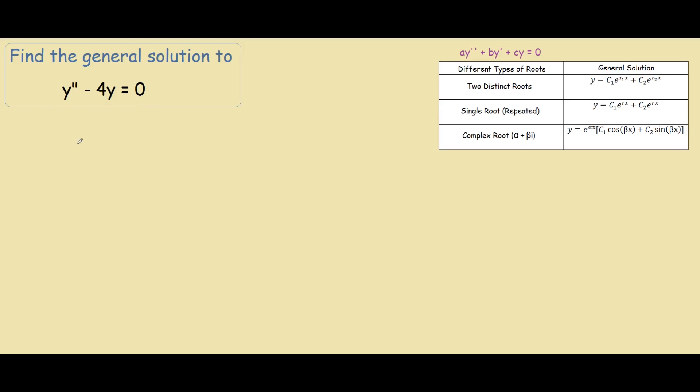So our first step is to transform it into its characteristic equation. This will let us find the roots. So we have m squared minus 4 equals 0.